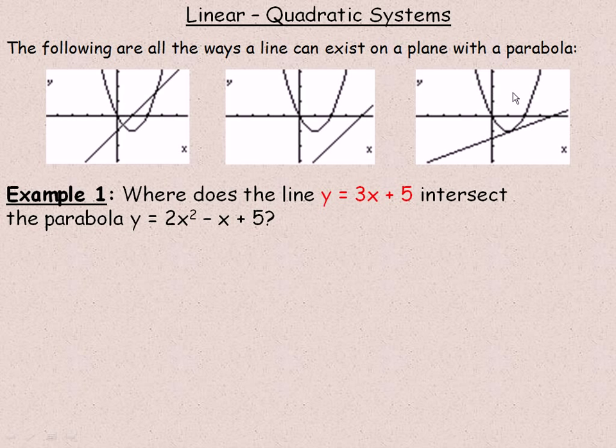These three diagrams in the top here show all the ways that a line and a parabola can exist together in a Cartesian coordinate plane on an x-y axis. The diagram on the left shows how a line could pass through and cut through the parabola in two different points. The middle diagram shows how a line might not cut through a parabola at all, so this would have no solution because there's no points in common between the line and the curve.